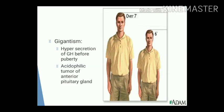Let us start with gigantism. It is a clinical condition resulting from hypersecretion of growth hormone before puberty, i.e. before closure of epiphysis with the diaphysis. That results in excessive skeletal, somatic, and visceral growth. The commonest cause is an acidophilic tumour of the anterior pituitary gland.